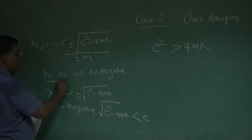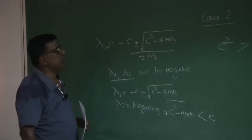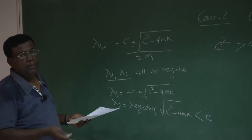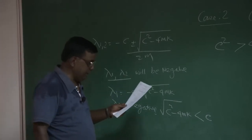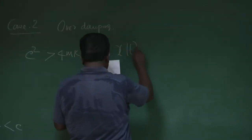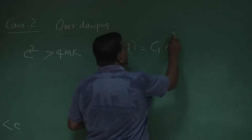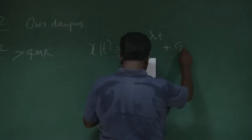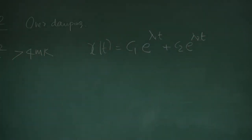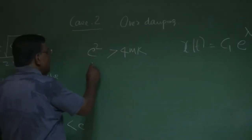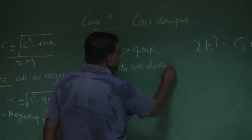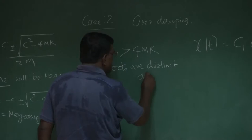This is the interesting part: both lambda 1 and lambda 2 will be negative. If c square is greater than 4mk, there is no complex part. So it is a very win-win situation — there will be damping, and fast. That is why it is called over-damping. So x of t we can write as c1 e to the power lambda 1 t plus c2 e to the power lambda 2 t. The roots lambda 1 and lambda 2 are distinct and negative.